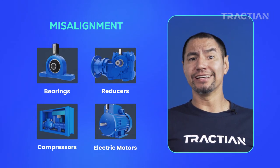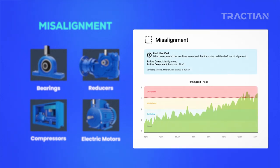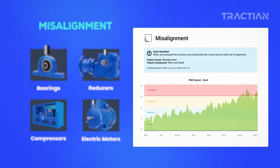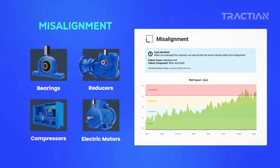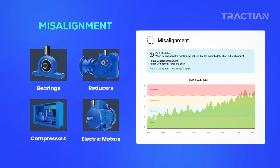If not detected early, the consequences of misalignment are warping of the shafts, internal damage to the motor, and damaged bearings due to excessive load on only one side.